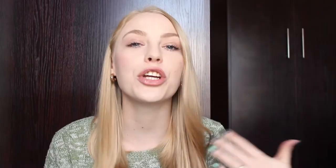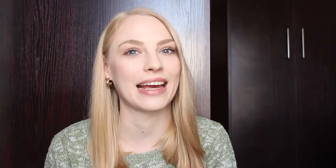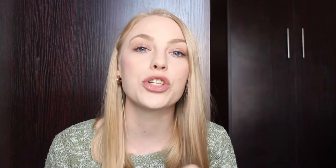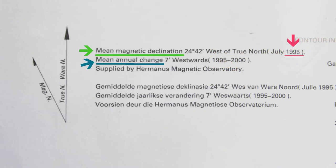When we calculate magnetic declination, we need to find a few pieces of information from our map. We are going to use the mean magnetic declination as well as the year that this magnetic declination was recorded — it is usually standing alone in brackets. We're also going to use the mean annual change.